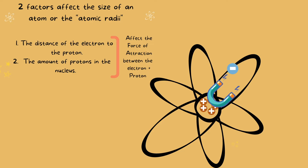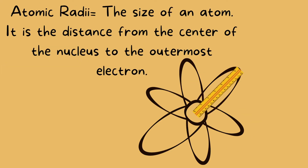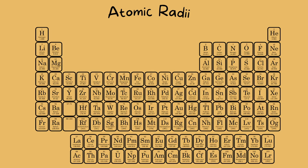We know now that two major factors influence the hold between protons and electrons. So now let's take a close look at atomic radii. Atomic radii is the size of an atom — specifically, it is the distance from the center of the nucleus to the outermost electron.